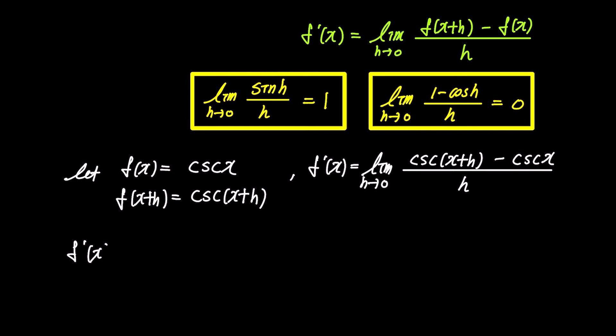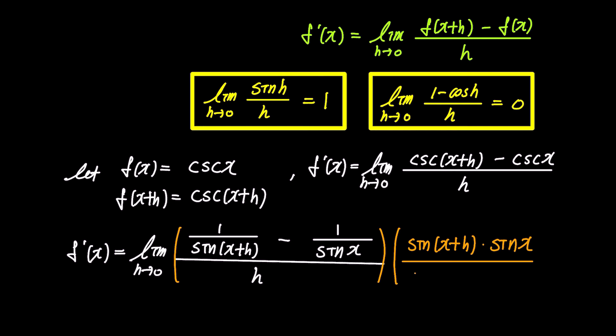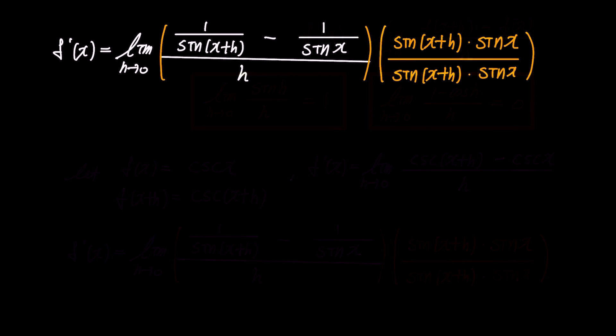Rewriting cosecant x as 1 over sine x, f prime x becomes the limit as h approaches 0 of 1 over sine x plus h minus 1 over sine x, all over h. And to simplify the expression, let's multiply both the numerator and denominator by sin x plus h times sin x. This gives the expression limit of sin x minus sin x plus h over h times sin x plus h times sin x.